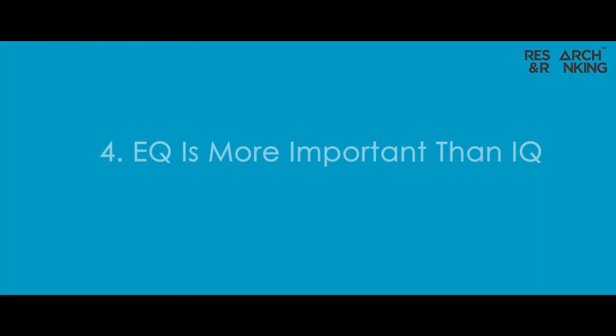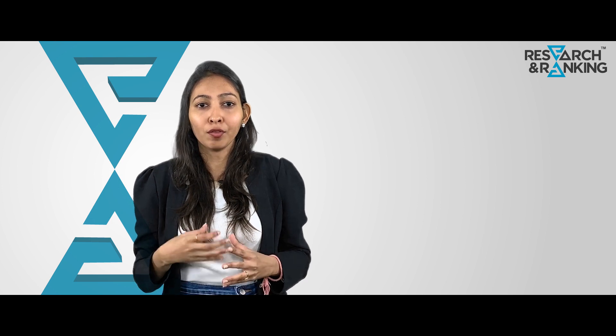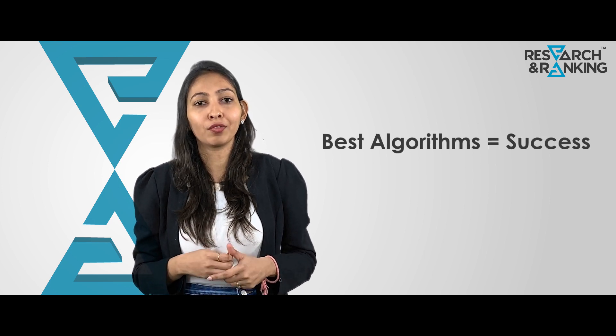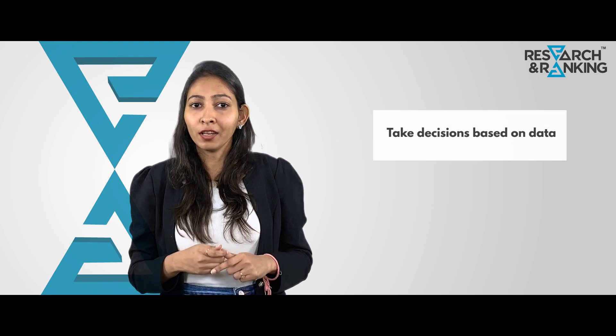Fourth, EQ is more important than IQ. So, what is EQ? EQ is emotional quotient whereas IQ is intelligent quotient. Many investors think that with access to the best algorithms, they'll be able to successfully trade in the stock market. However, many investors lose in the stock market not because they don't have access to the best algorithms and platforms, but they take emotional decisions based on greed, anxiety, overconfidence, etc. Take decisions based on data and empirical evidence rather than taking decisions based on your emotions.